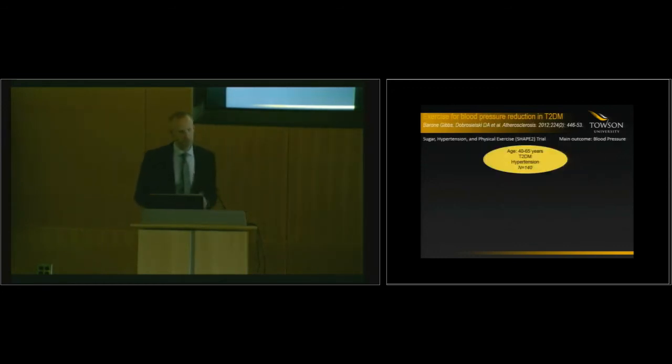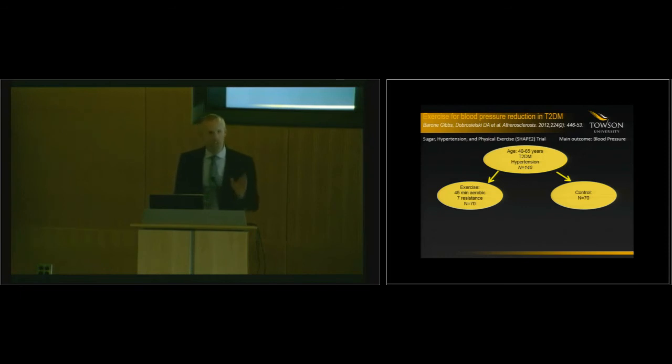Rita earlier this morning talked about the SHAPE2 study. I'm glad she cited the study. I'm glad somebody is reading some of the work that I have done. The Sugar Hypertension and Physical Exercise trial was for individuals 40 to 65, type 2 diabetes and hypertension, and we exercise trained them for six months. About 70 people were enrolled in 45 minutes of aerobic exercise combined with resistance training, and another 70 individuals were enrolled in a controlled condition. She said that there were no changes in blood pressure. That was the main outcome.